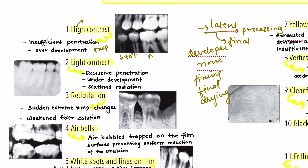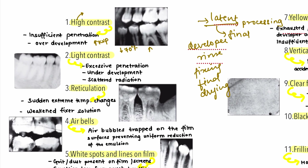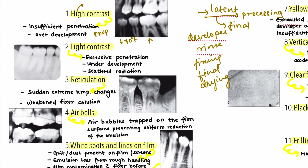The next error is light contrast, which occurs when there is excessive penetration of the x-ray beam — in that case, reduce the kilovoltage peak. Other reasons for lighter or whiter radiographs include under-development, scattered radiation, or excessive fixation. You need to follow the time-temperature protocols, and for scattered radiation, use a proper suitable cone size.